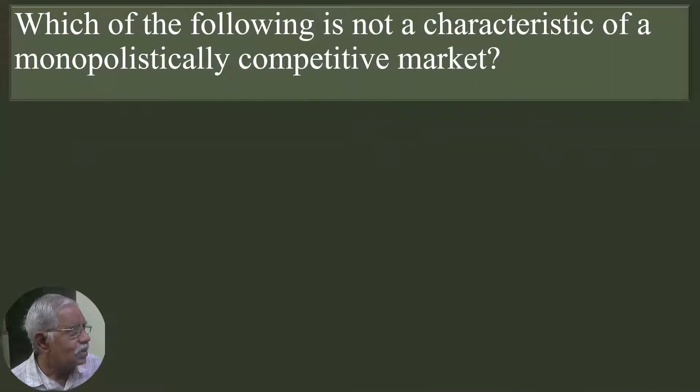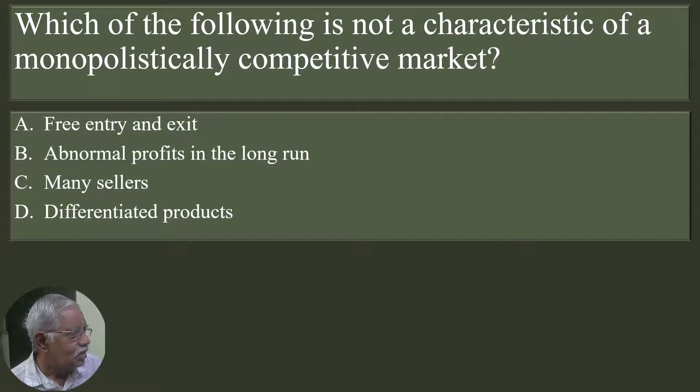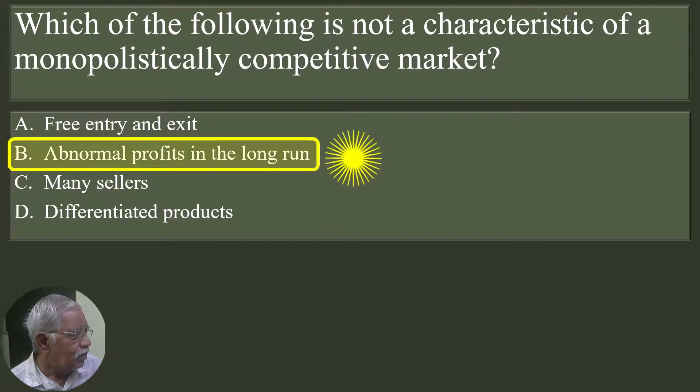The second question. Which of the following is not a characteristic of a monopolistically competitive market? Free entry and exit. Abnormal profits in the long run. Many sellers. Differentiated products. Abnormal profits in the long run. A monopolistically competitive firm can earn only normal profit in the long run. B is the correct answer.